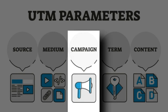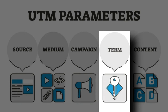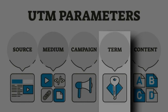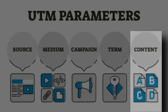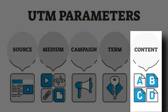The campaign tag is a term you select to use as an identifier for your initiative — this could be things like your newsletter, a spring sale, or a product launch. The term tag helps identify a keyword that connects to the traffic it generates, so if you're running a pay-per-click ad, you can use this tag to identify the keyword attributed to the traffic. Finally, the content tag helps identify which element was clicked, for example, the footer CTA or a header banner.